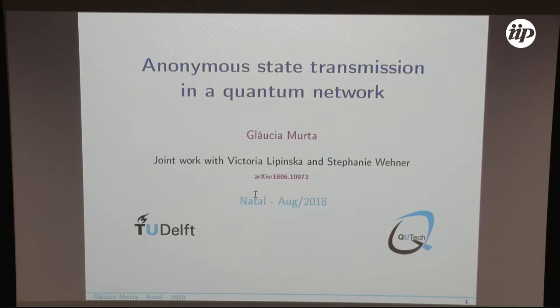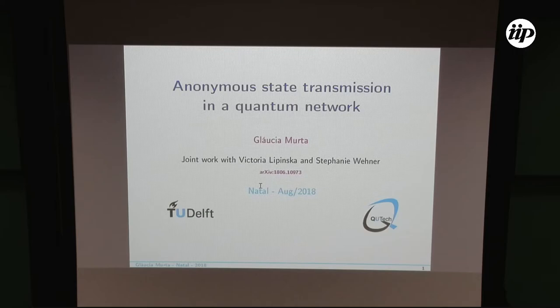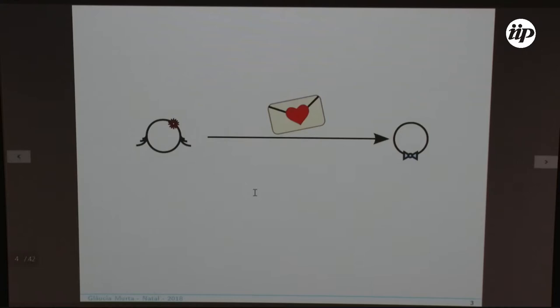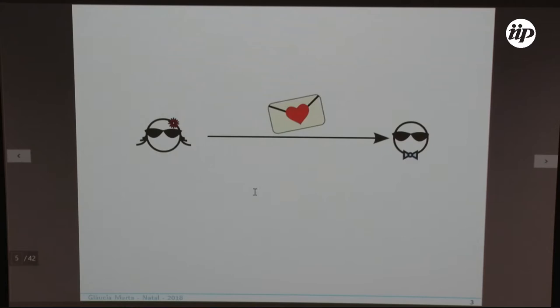We are very used to scenarios where Alice and Bob have a secret message they want to communicate, and they are worried about an eavesdropper. But sometimes the message itself does not carry much information — what's much more relevant is who is sending it. So we actually want to hide who is communicating.